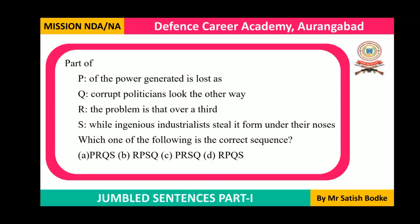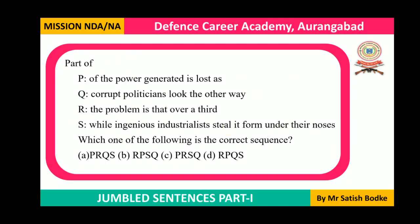Example four: 'The part of.' After 'of' we do not use another 'of,' so the answer will not start with P. Options A and C both begin with P and are eliminated. We never use 'of of' in succession. 'Corrupt politicians' is a noun phrase that can follow 'of.' But we also check: 'the part of the problem is that' — 'a third of the power generated' means one-third. 'The part of the problem is that a third of the power generated is lost.'